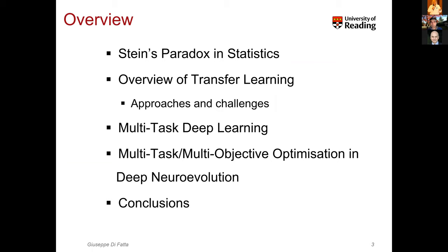This talk is mainly towards multi-task deep learning, using a deep neural network. After I give an overview of the field, I will show you some of the research activity we have been doing, in particular on multi-task multi-objective optimization with the deep neural evolution.